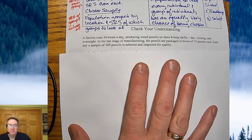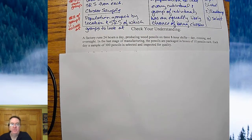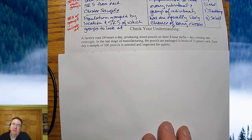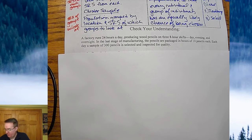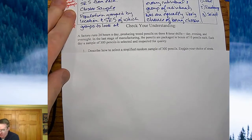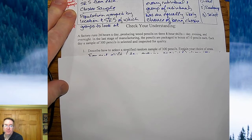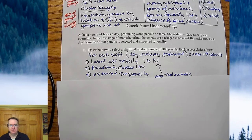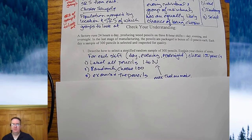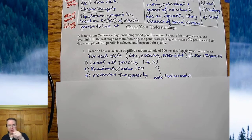Now hopefully you've gone through the check for your understanding. So let's talk through this. Factory runs 24 hours a day, producing wood pencils in three eight-hour shifts. There's one in the day, the evening, the overnight. In the last stage of manufacturing, the pencils are packaged in boxes of 10. And each day of the sample, 300 pencils are selected to inspect for quality. So first of all, how would you do a stratified random sample for this? Explain your choice of the strata. For each shift, that's probably the easiest strata to do because there's not different types of pencils. So you're going to say, we're going to pick some from the day, the evening, and the overnight. And then you're choosing a hundred pencils from each. So you're going to label all the pencils, one through N, for each shift. You're going to choose a hundred numbers out of that list. And then you're going to examine those pencils.